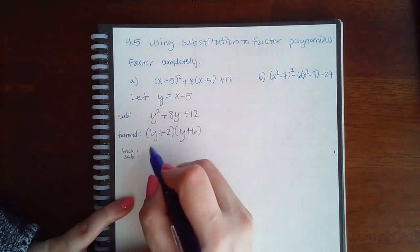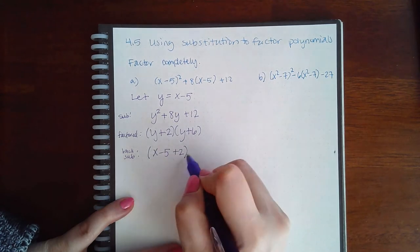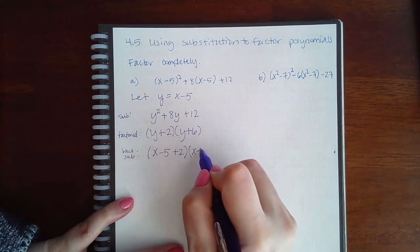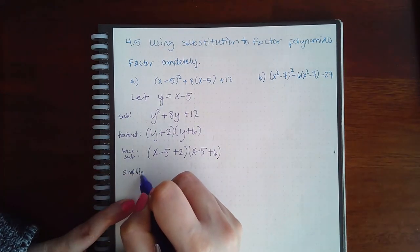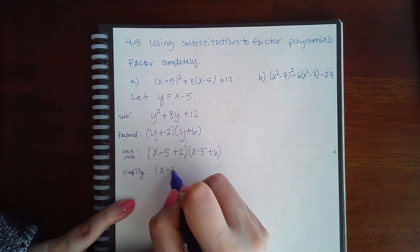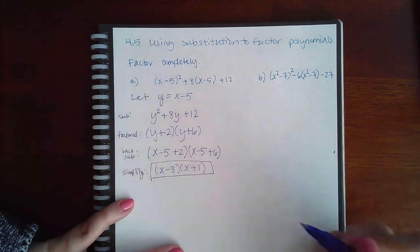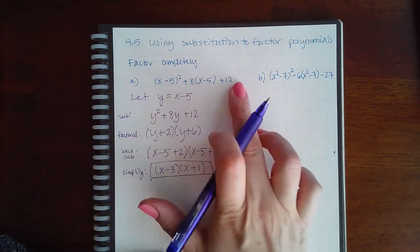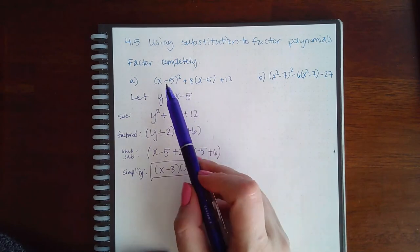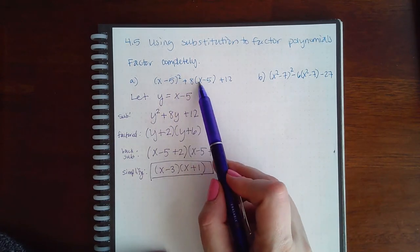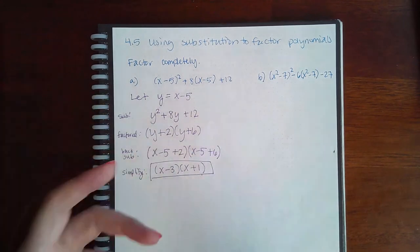So when I back sub, what was y? y was x minus 5. And then my plus 2: y was x minus 5, and then the plus 6. And then if you simplify this, we get (x minus 3)(x plus 1). And so this is the final answer for this expression. That's the same thing as if I were to have squared all of this, distributed that, combined all the like terms, and then factored the result.